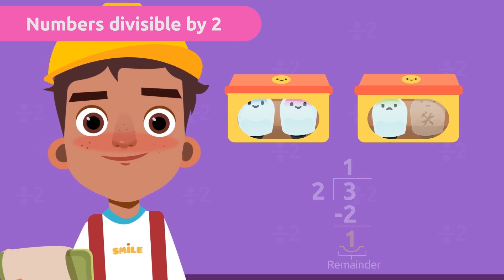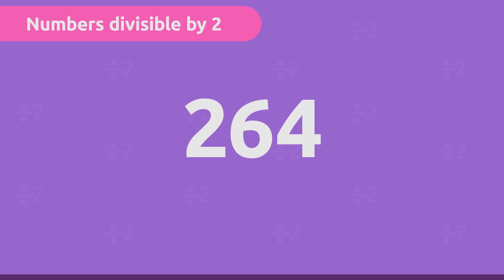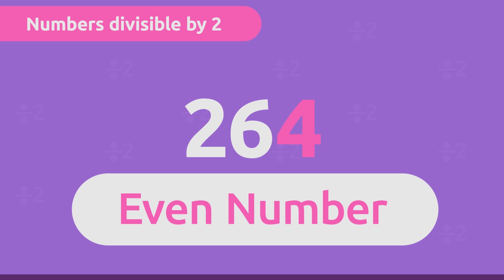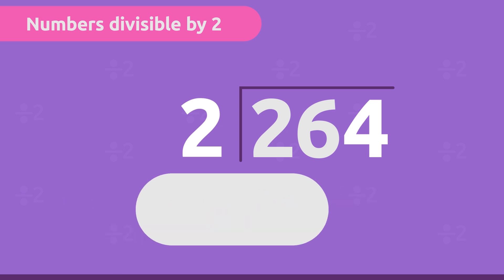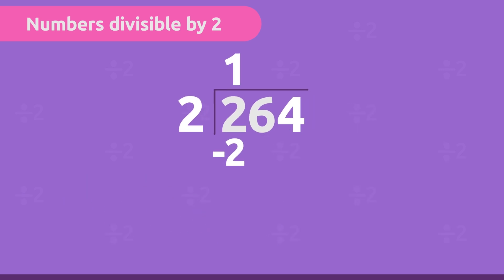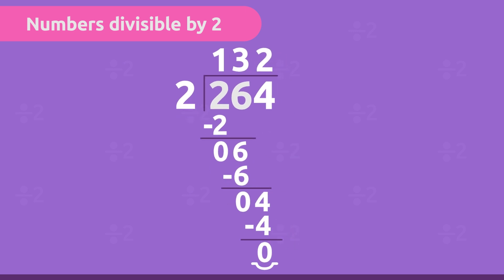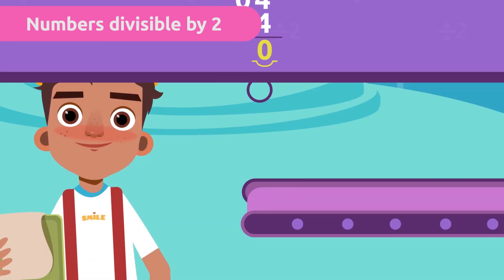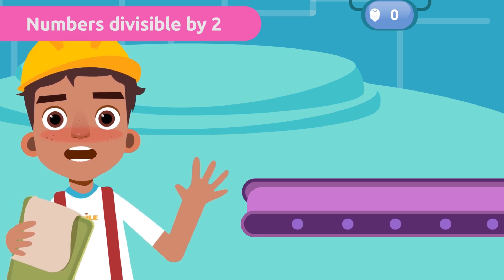Let's give it a try. To figure out if a number is odd or even, we have to look at its last digit. The last digit of 264 is four, which is an even number. So 264 is even and it should be divisible by two. Let's test the rule. The remainder is zero and we have proven that the divisibility rule of two works. Fantastic! No robot was left over.